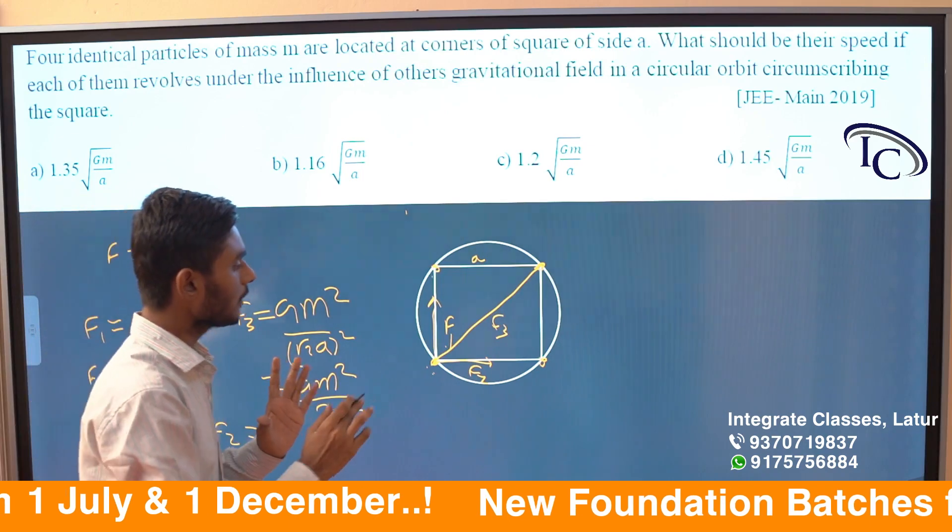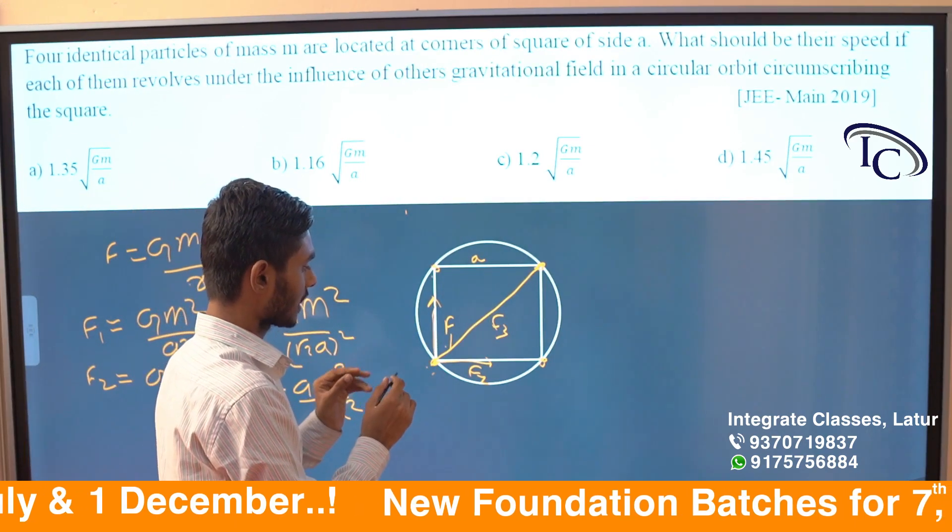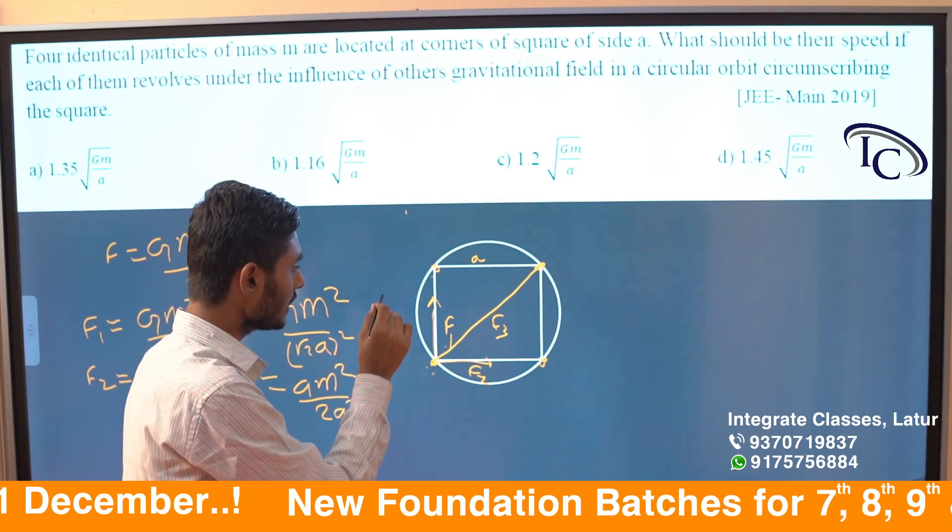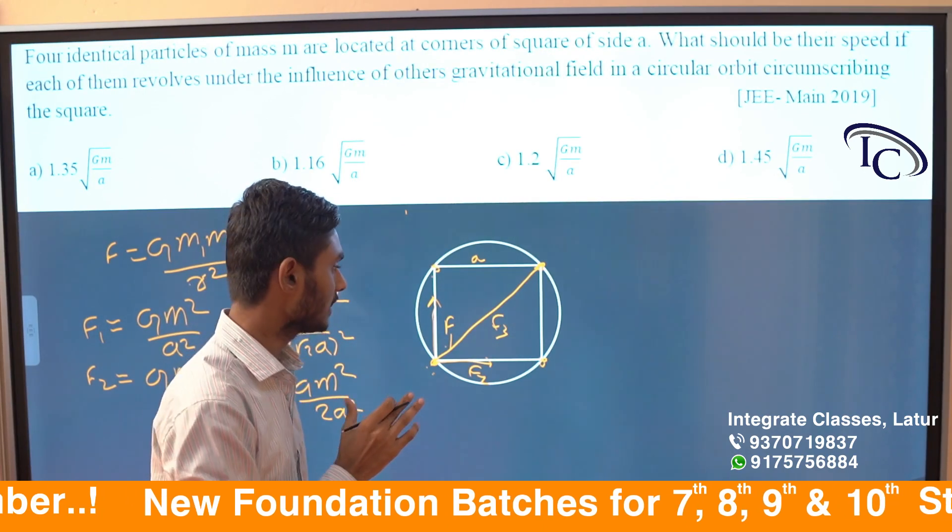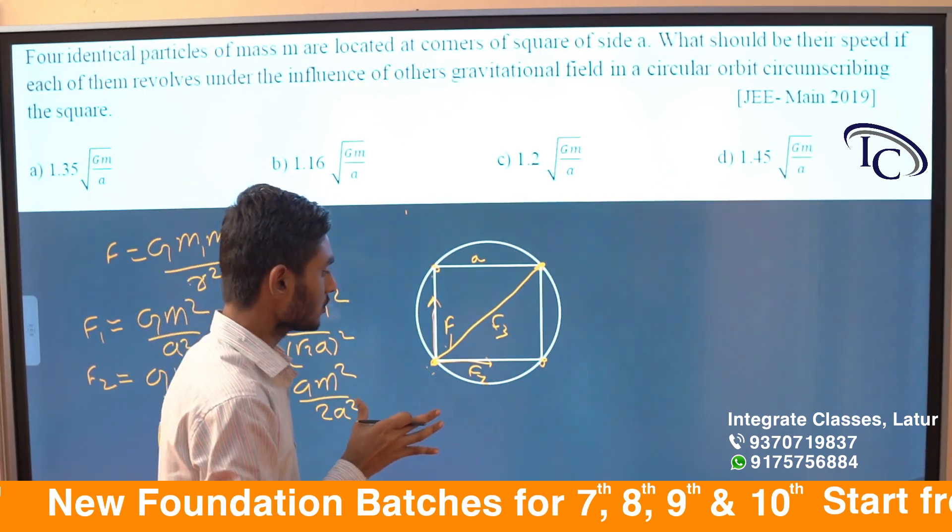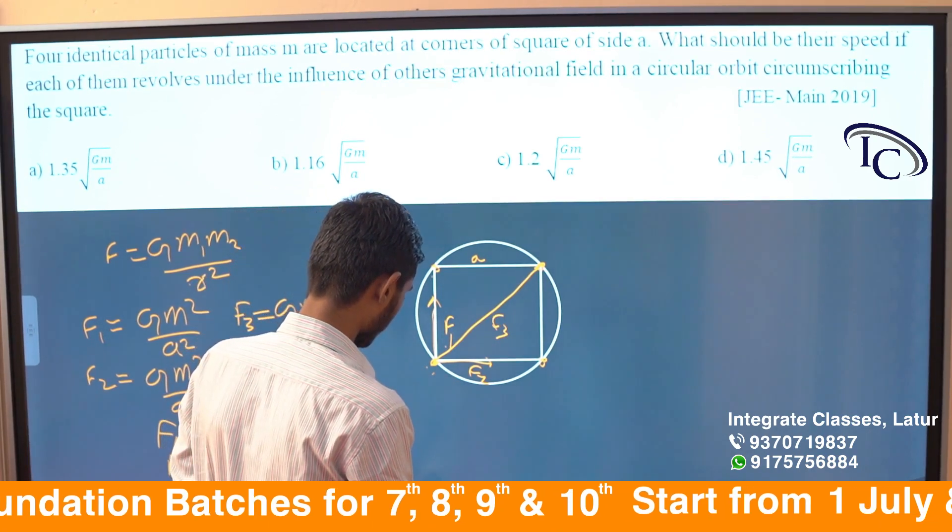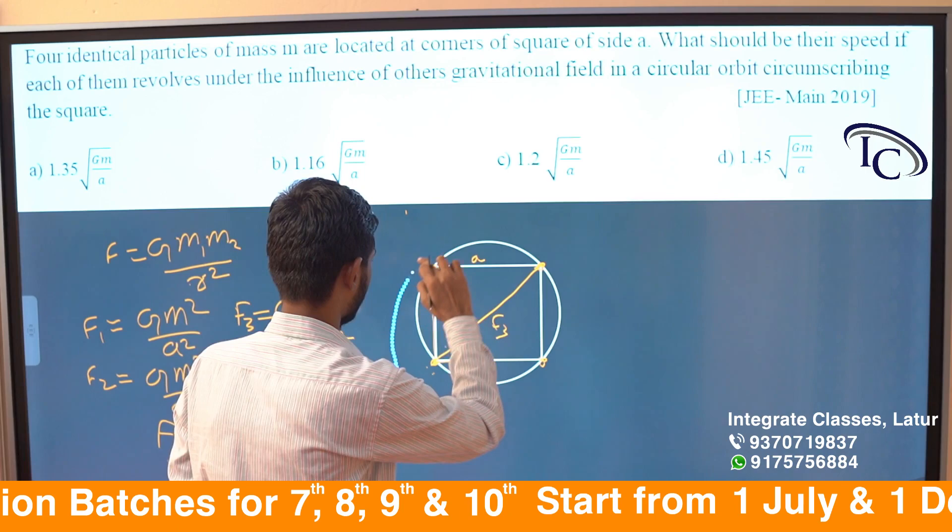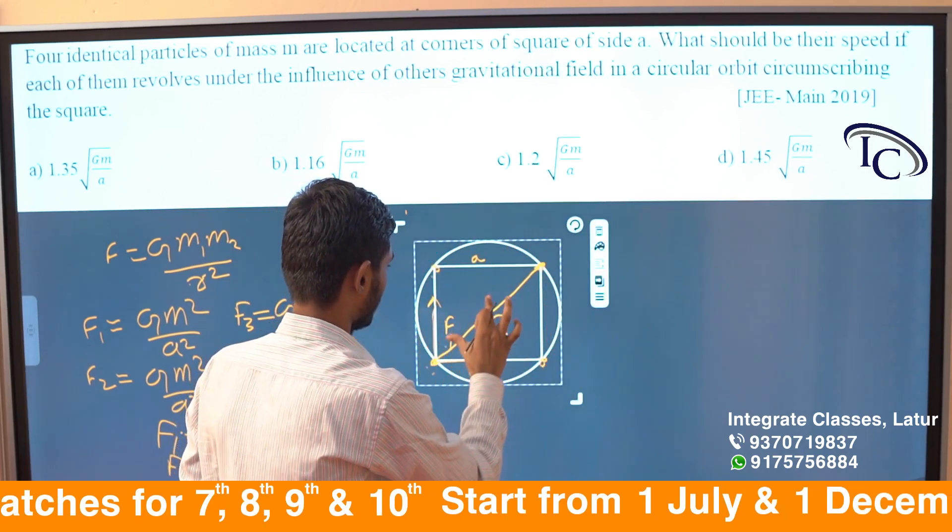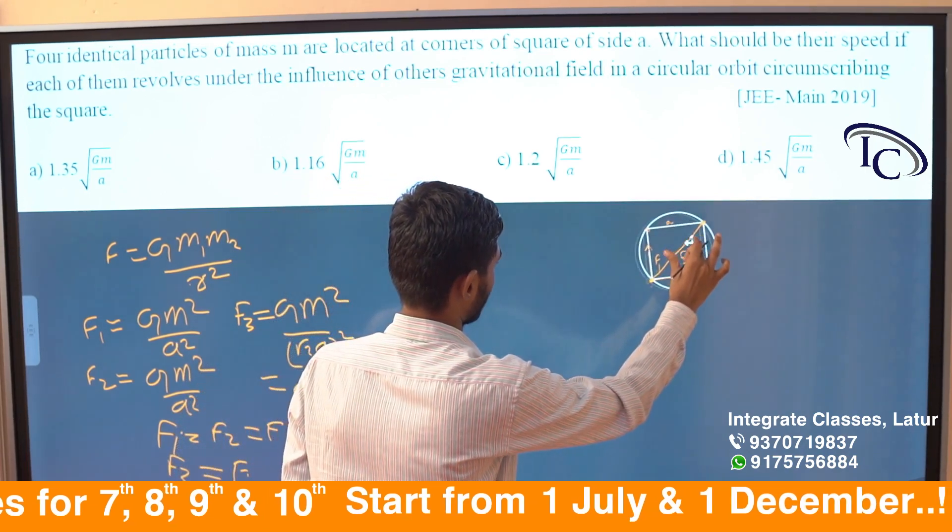The motion is in this direction. F1 is along the side, F2 is along the other side at 90 degrees. They have the same magnitude. We need to find the resultant force.